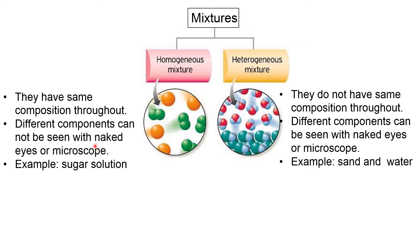Another distinguishing feature is that different components cannot be seen with the naked eye or microscope in a homogeneous mixture. But in heterogeneous mixtures, you can see different components with the naked eye or microscope. For example, in a mixture of sand and water, you can easily see sand and water separately, but in a sugar solution, you cannot see sugar and water as different components.